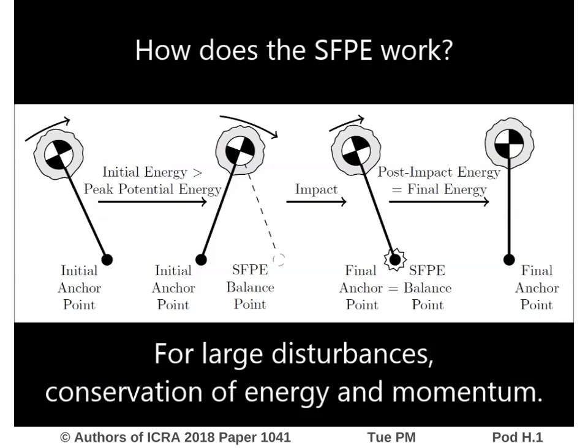If the initial energy is higher than the peak potential energy, a step is required to reduce the post-impact energy to equal the peak potential energy. For this scenario, conservation of energy is used between impacts, while conservation of angular momentum about the anchor point is used at impact. The location at which the model needs to place its swinging foot to achieve the desired energy level after impact is chosen as the SFPE balance point.